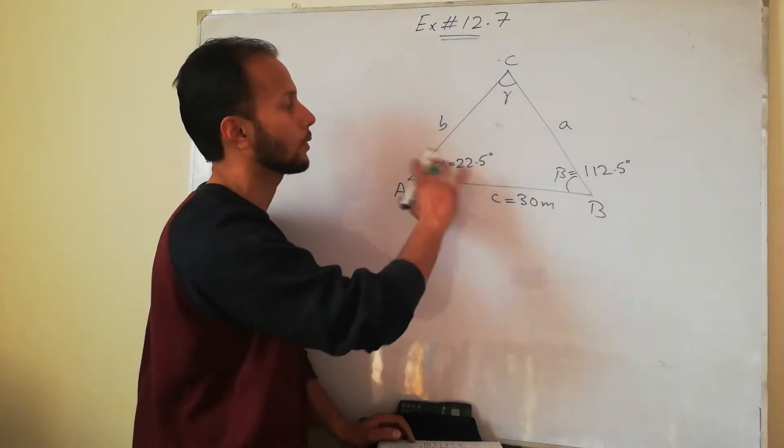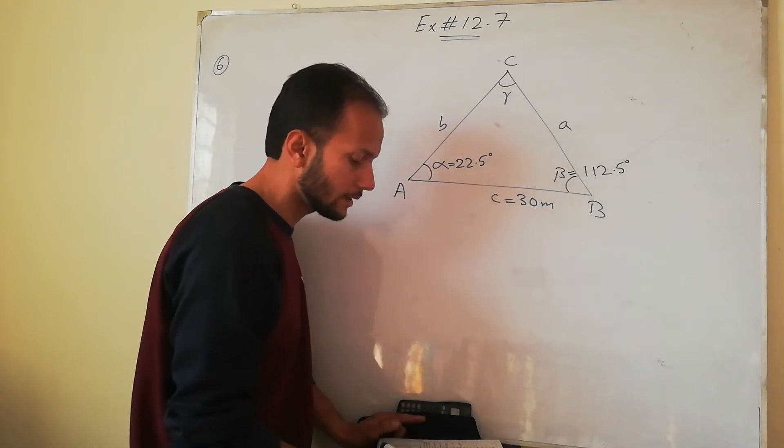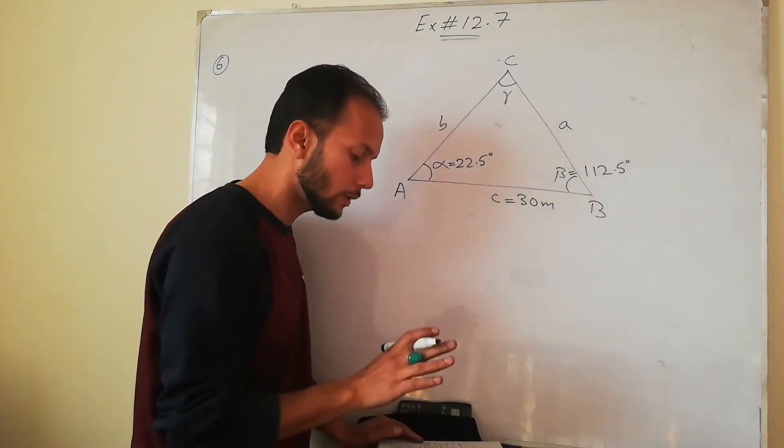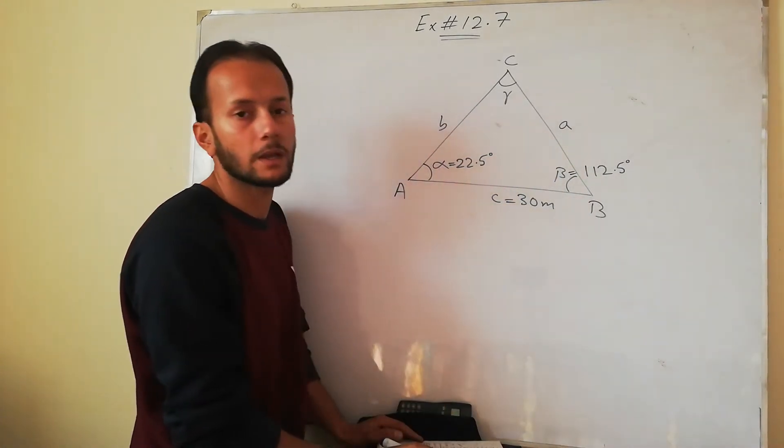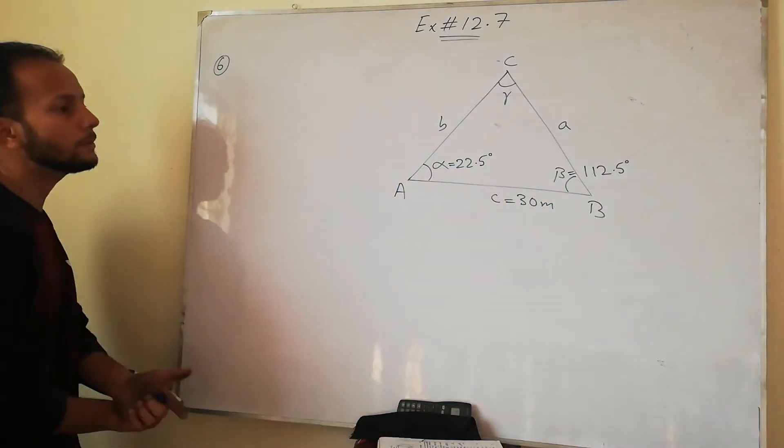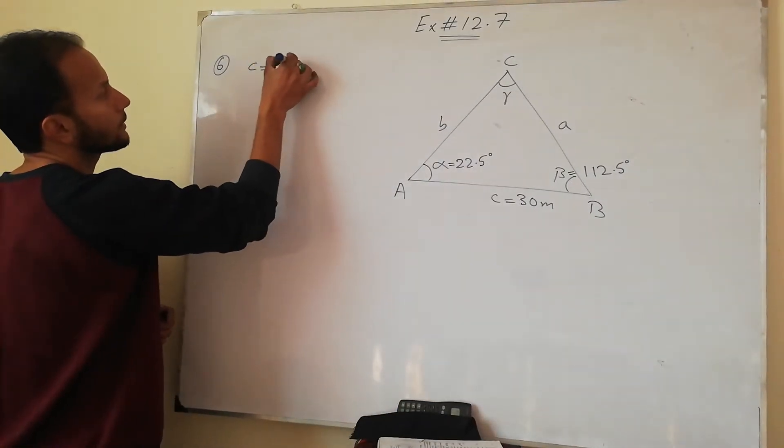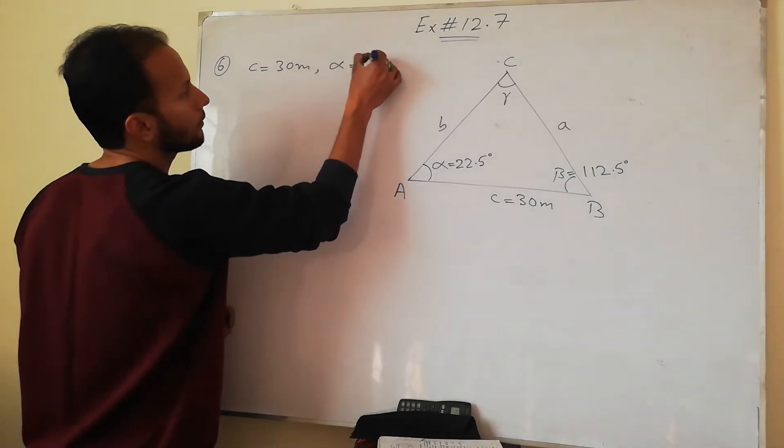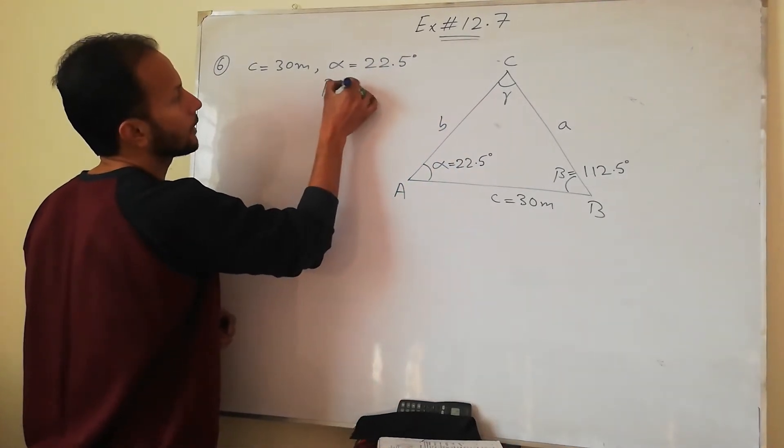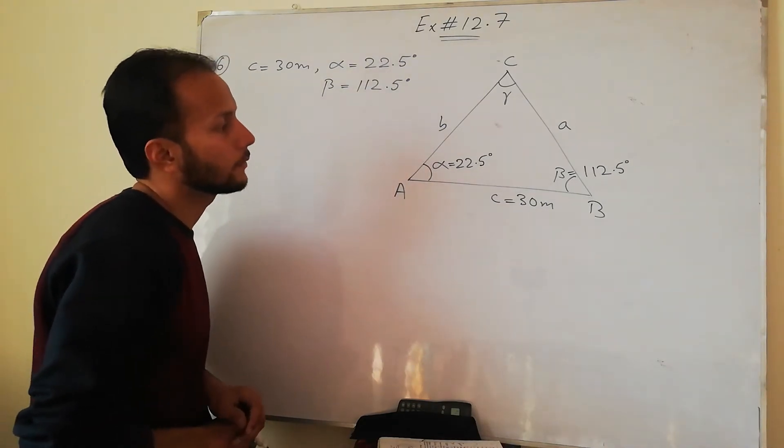The cost of the grass. So it means how much will you find the cost of planting the grass. So it means area to find out. So data given: one side given is 30m, alpha angle given is 22.5 degrees and beta angle given is 112.5 degrees.